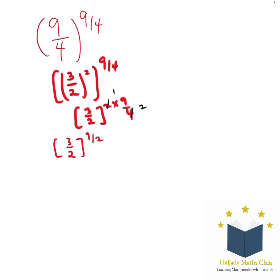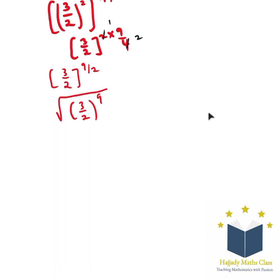Rewriting this, it is the same thing as having 3 over 2 to the power of 9. Furthermore, we can say that rewriting this shows that we have 3 over 2 to the power of 8, multiplied by another root of 3 over 2.